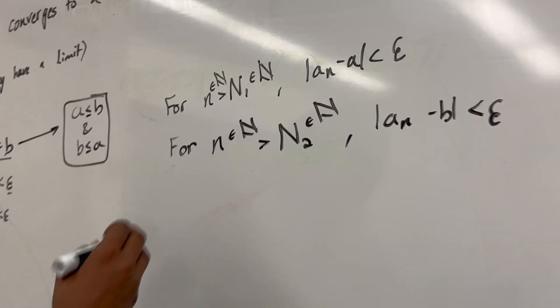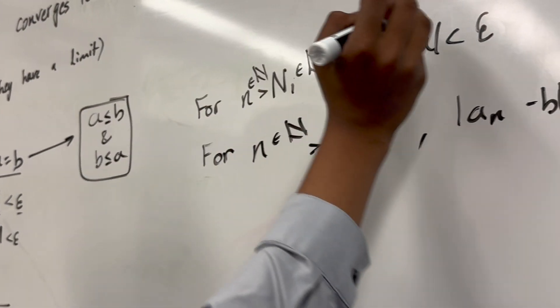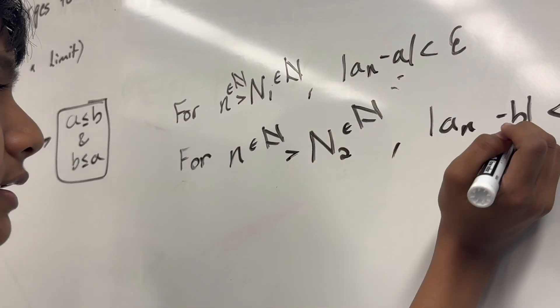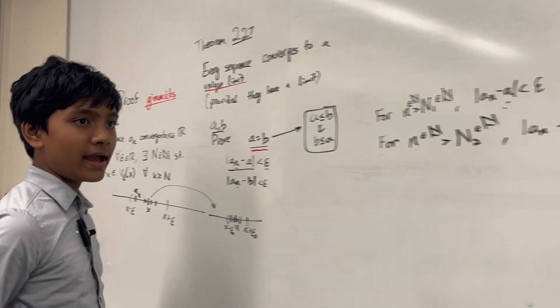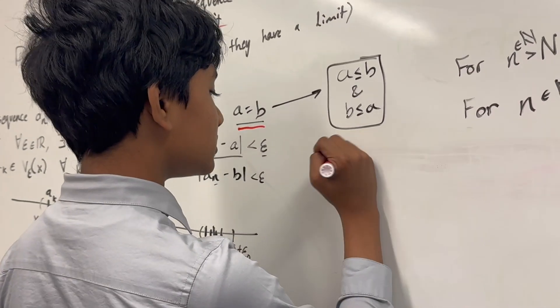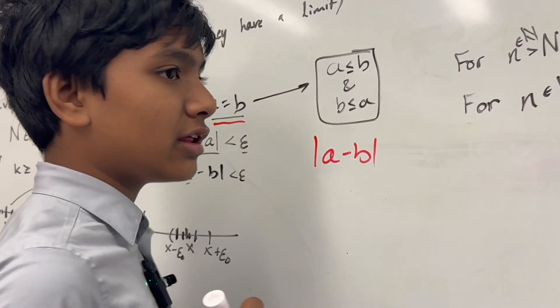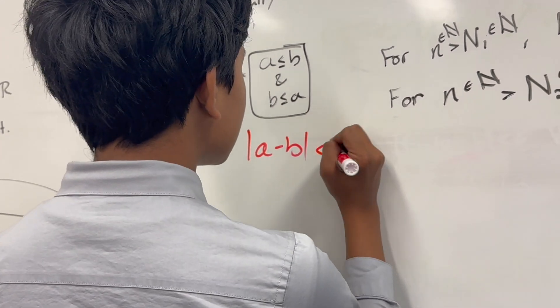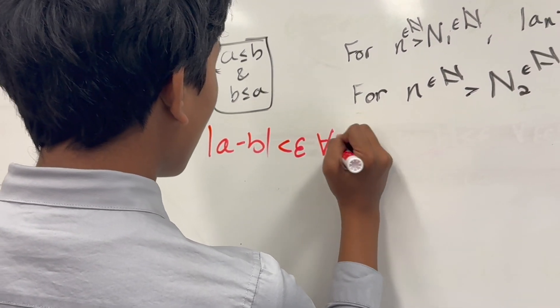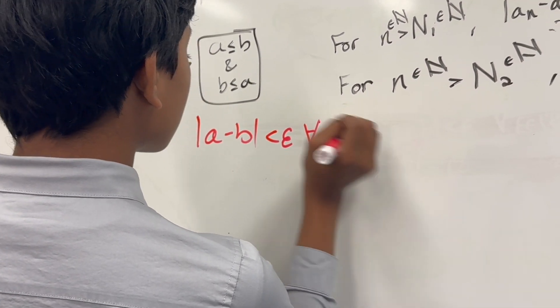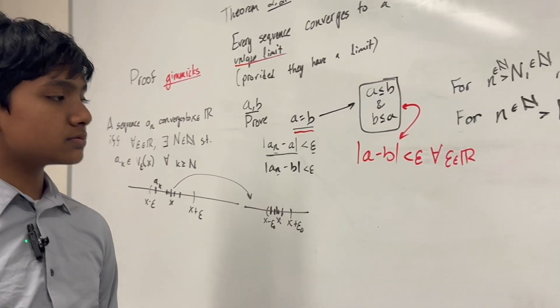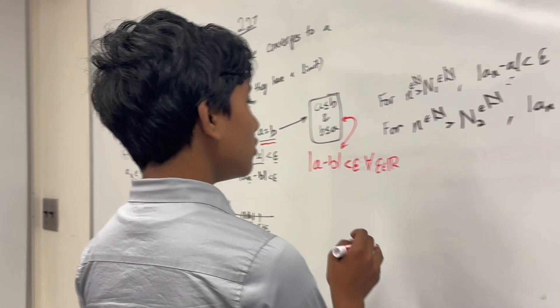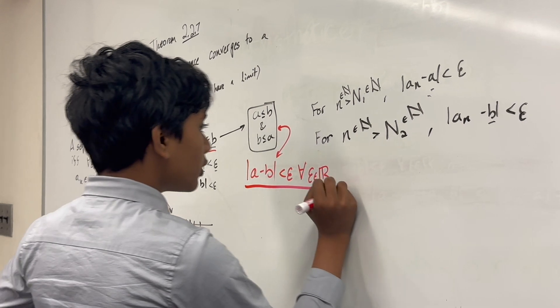Now, where do we go from here? We want to show that A is equivalent to B. We're actually going to figure out another definition of A equals B, and essentially, that's when the absolute value of A minus B is less than epsilon for all epsilon in the real numbers, which is essentially the same thing as this. So, now, with that, what can we do?